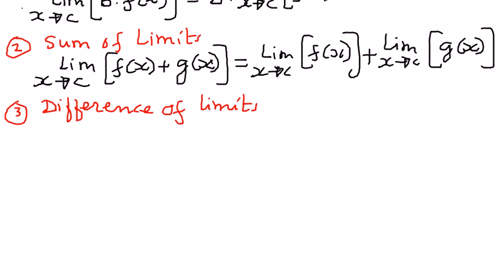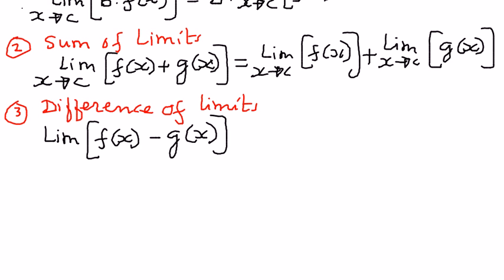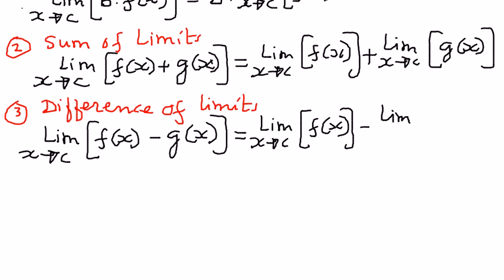It is very similar to the sum of two limits. The limit of the first function minus the second function, f of x minus g of x, as x approaches c, is going to be equal to the limit of f of x as x approaches c, minus the limit of g of x as x approaches c. In words: the limit of a difference is the difference of the limits — the difference of the individual limits.